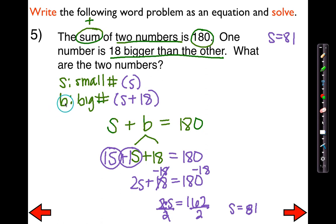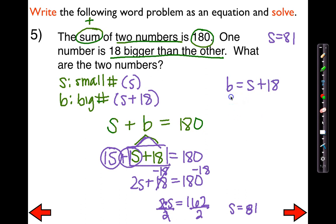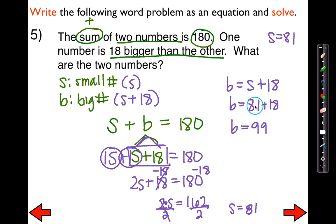What about the bigger number? Well, the bigger number was S plus 18. I know what S is — S is 81 — so I'm just going to replace this with 81, add that to 18, and I'm going to get a grand total of 99. They didn't ask for big or small specifically — all they asked was what are the two numbers? I'm going to claim it's 81 and 99.